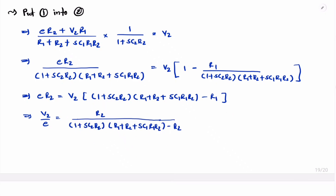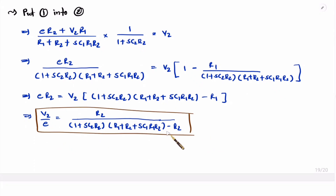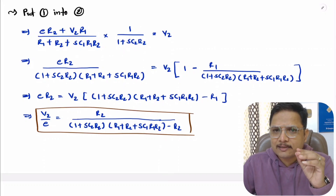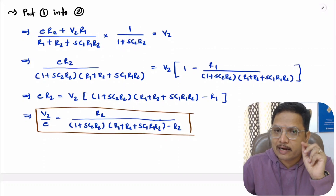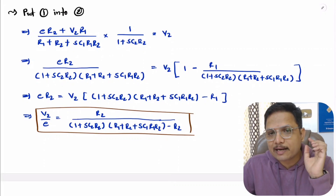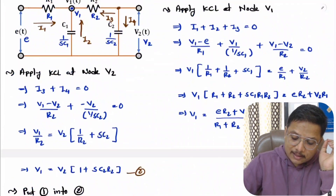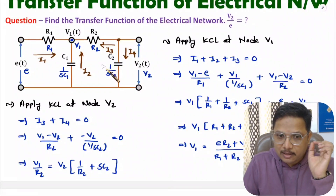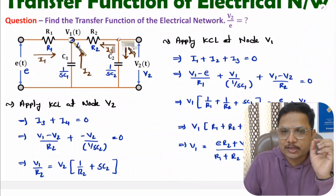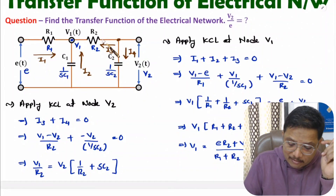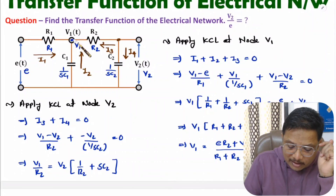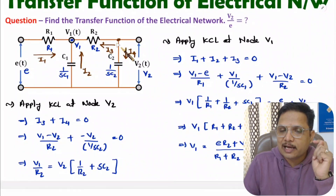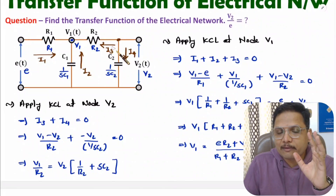This is how we identify the transfer function. The key steps are: first, convert all elements into the Laplace domain; then apply KCL to get equations at each node. First identify the equation for V1, then substitute that into the KCL equation at V2, and you will have the ratio V2/E. With practice you will always get the correct answer.